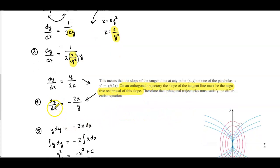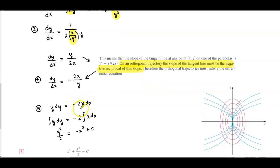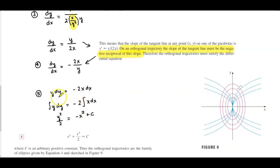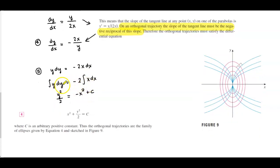So now we would have dy over dx which is equal to negative 2x over y. Now what we can do is take the integral. First we're going to multiply both sides by dx and y so we get y dy which is equal to negative 2x dx and then we're going to integrate both sides.